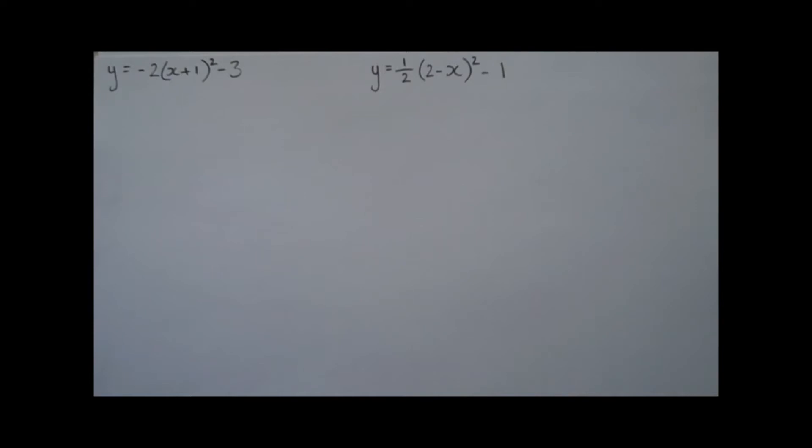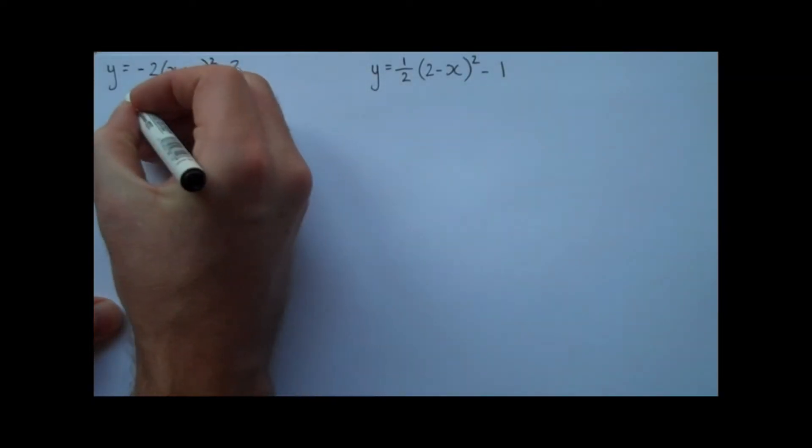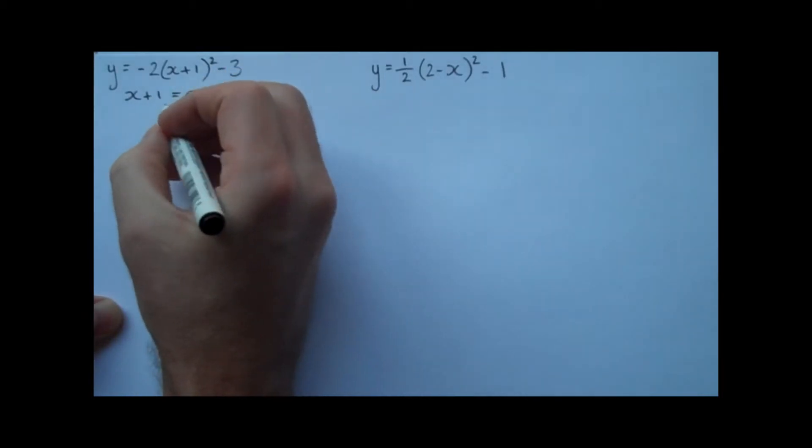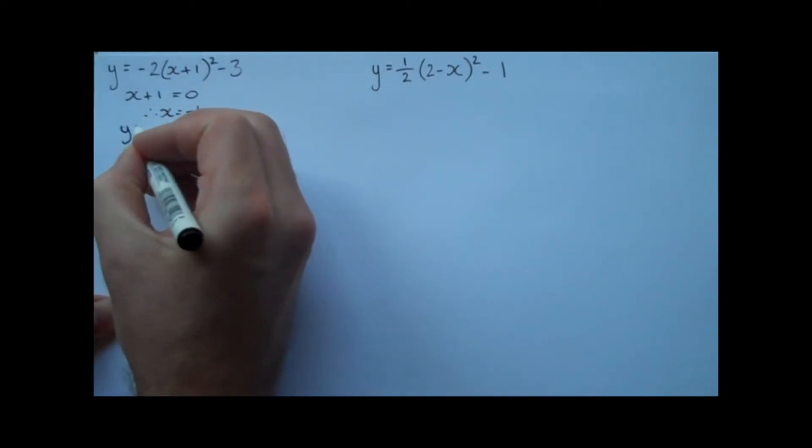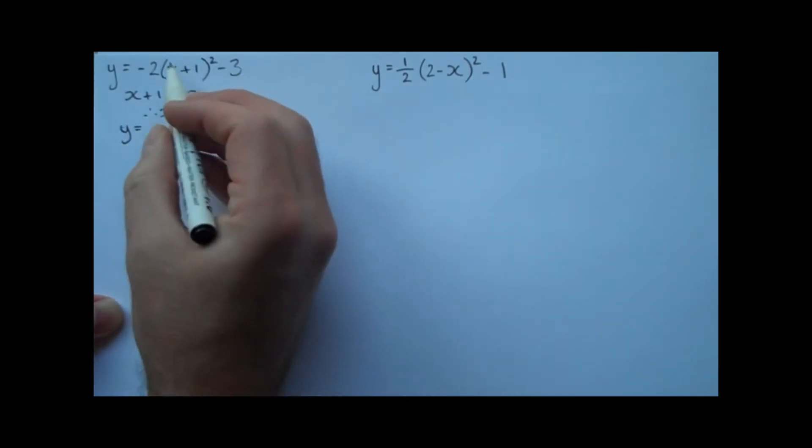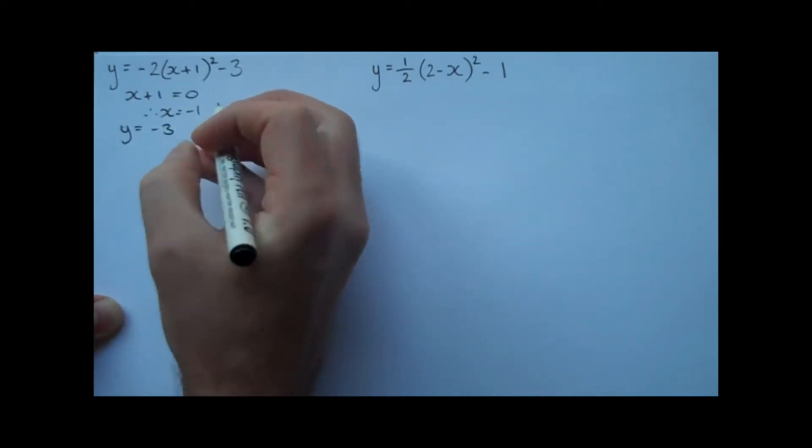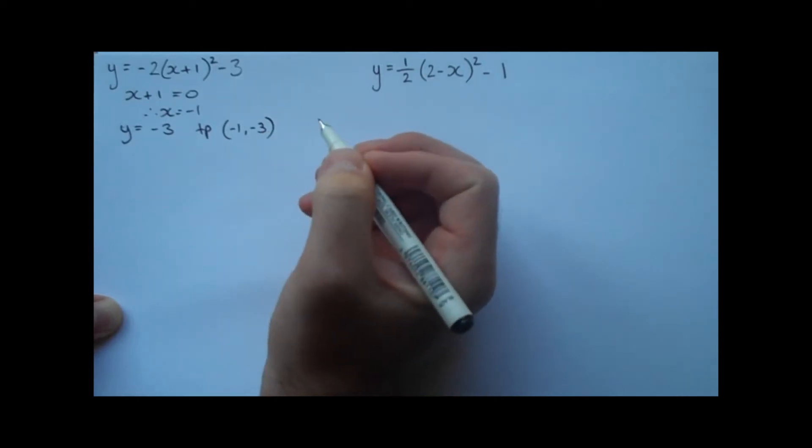First of all, we want to find the location of the turning point. So we let the bit inside the bracket equal 0, so we have x + 1 equaling 0, solving for x gives us an x value of negative 1. If we substitute this back into the equation to find the y, we would find that this becomes 0, so we're just left with negative 3. So therefore, the turning point is (-1, -3).